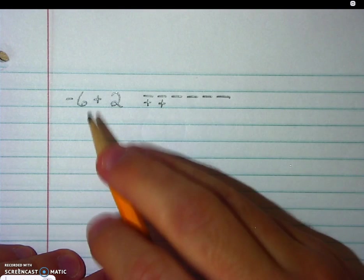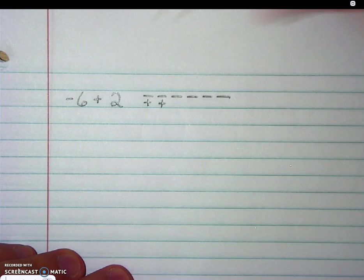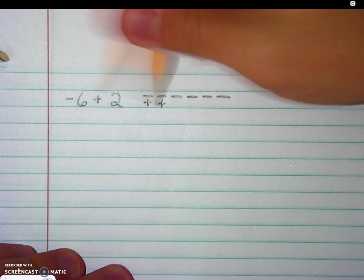So when we're adding integers and they're relatively small numbers like this, we can show modeling by showing the number of negatives and the number of positives that I have.